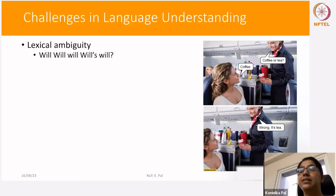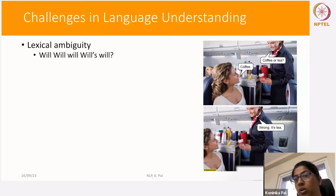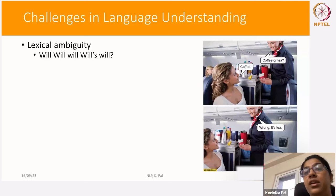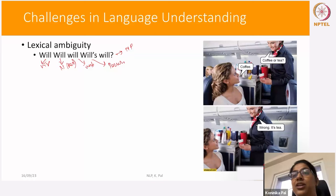Let's look at how ambiguity affects language understanding. Consider the sentence: 'Will Will will Will Will's will?' — five words using the same spelling. This is lexical ambiguity, because all five instances of 'will' mean different things: a modal verb, a person's name (Will), a legal document (will), another person (Will), and another legal document. It's very difficult for a machine to understand this lexical ambiguity.